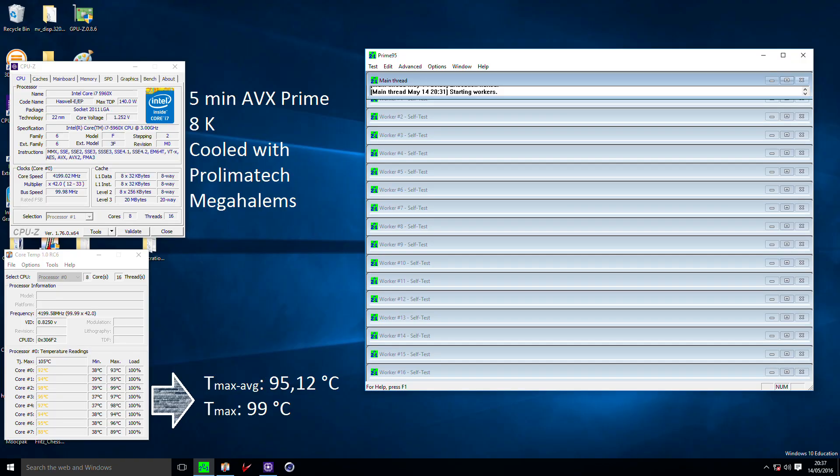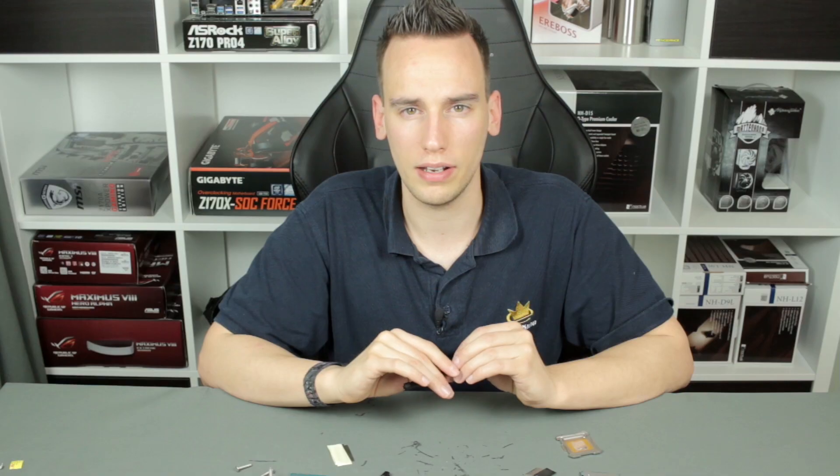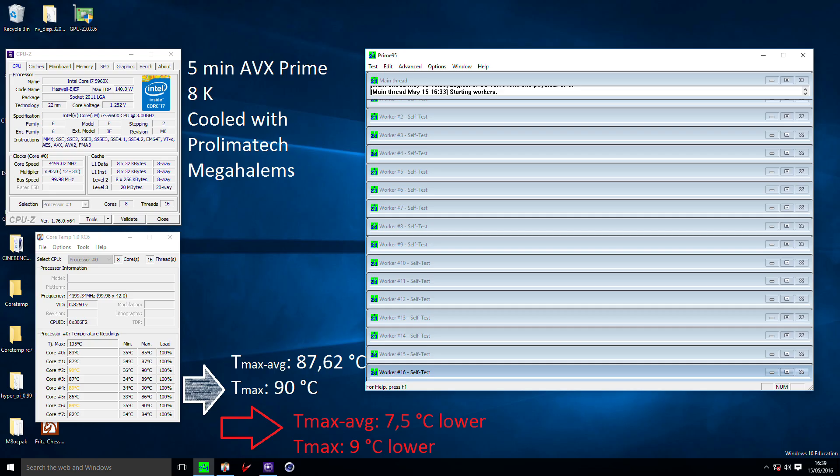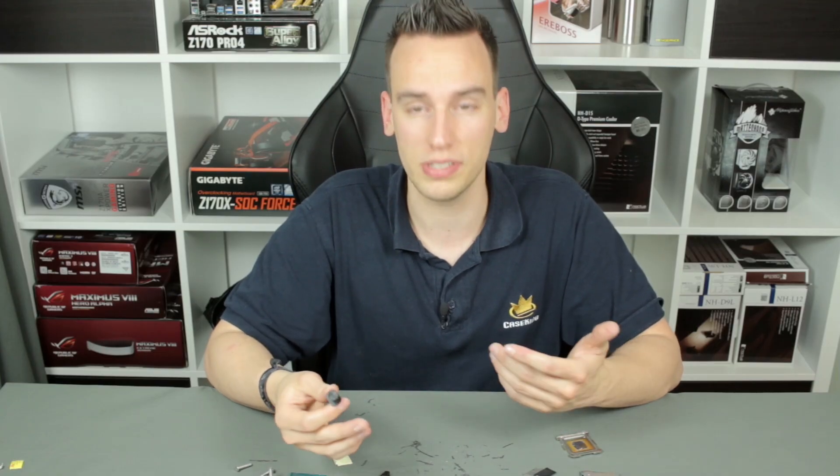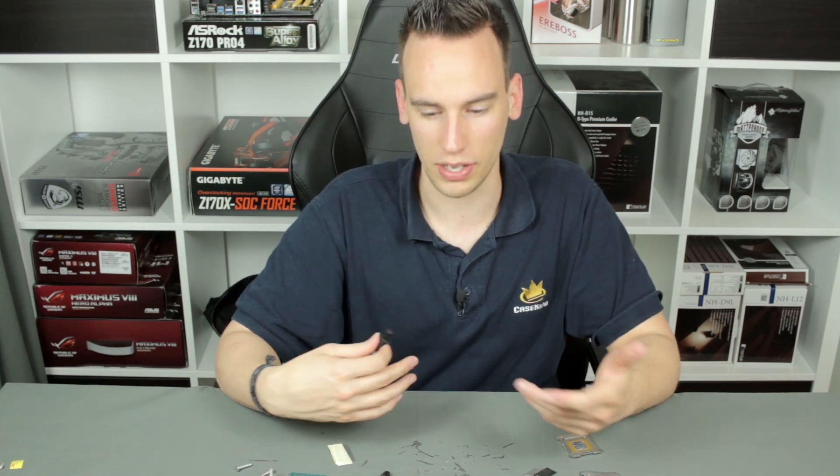Here's a screenshot I took with a 5960X before delidding. You can see the temperature was quite high. Of course, it was not the best cooling solution - just a Prolimatech Mega Halems CPU cooler, so it's just air-cooled. And this is a screenshot I took after delidding and replacing the indium solder with liquid metal. You can see the temperature dropped by around 8 to 10 degrees, which is actually pretty good. I didn't expect to gain 10 degrees, which is pretty massive considering that the CPU is already soldered.